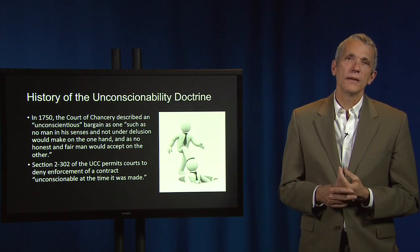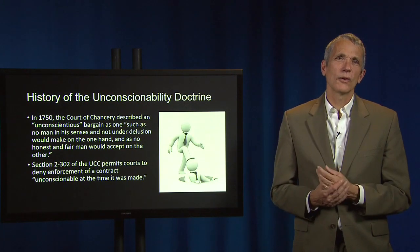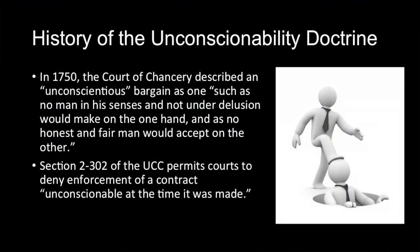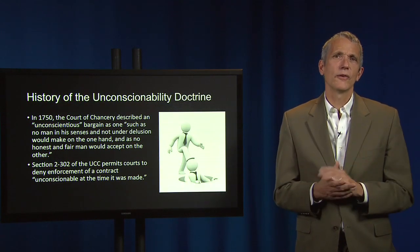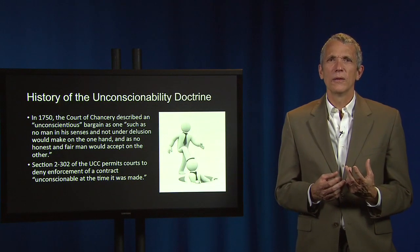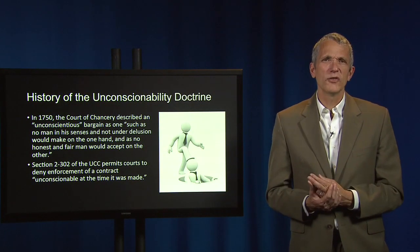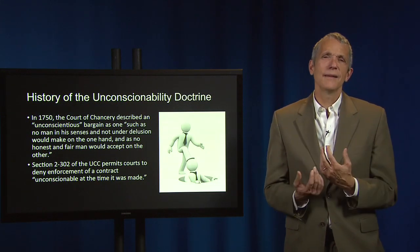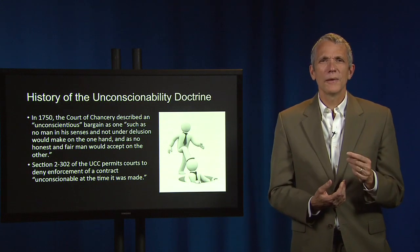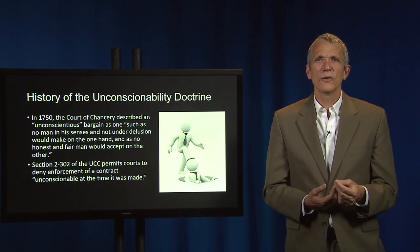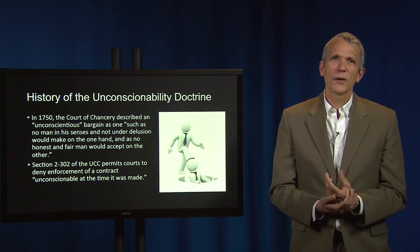The modern unconscionability doctrine is only about 50 years old, but has historical antecedents. In 1750, the court of Chancery described an unconscientious bargain as one such as no man in his senses, and not under delusion, would make on the one hand, and as no honest and fair man would accept on the other. This quotation is suggestive of what I earlier described as the Epsteinian inversion: some bargains are so substantively unconscionable that there must have been some procedural defect in their formation. One of the parties must have been not in his senses, or under delusion, or somehow tricked into the contract. These earlier cases, however, were not brought under a single clearly established doctrinal umbrella until the latter part of the 20th century.